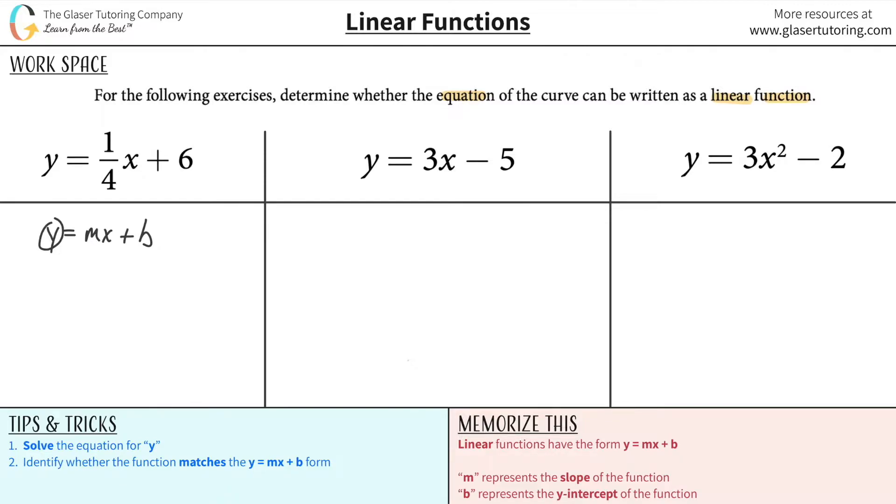Now recall that the y and the x are variables, and the m and the b represent two basically constant things. The m stands for slope and the b will stand for the y-intercept.